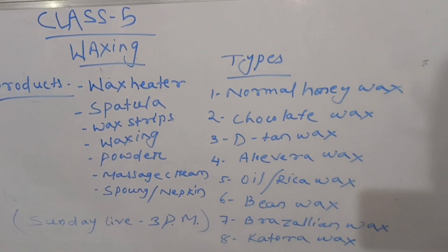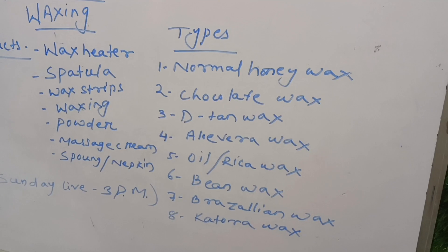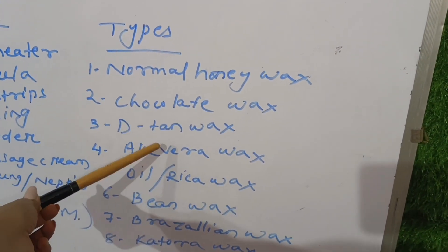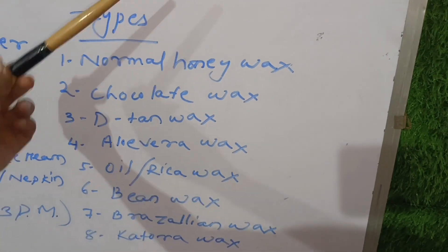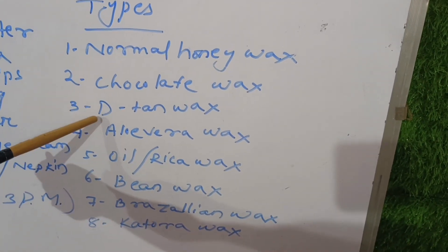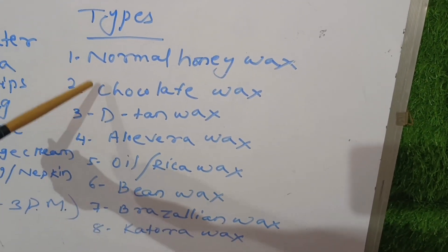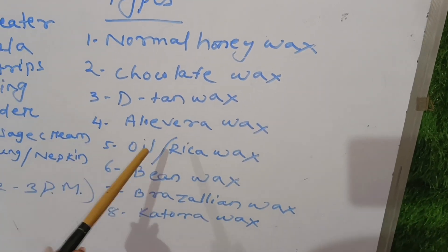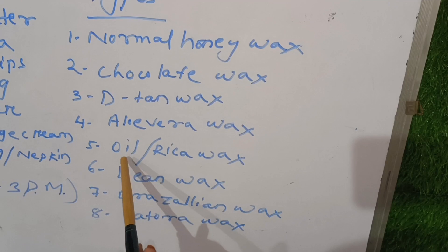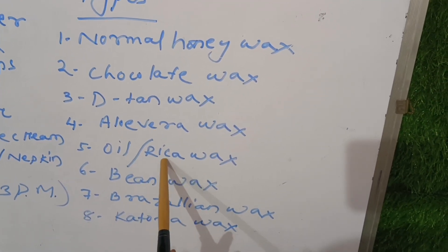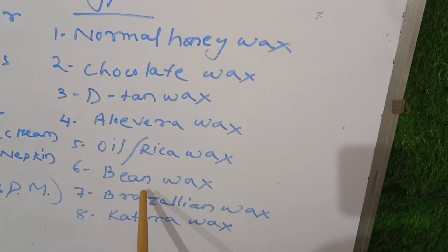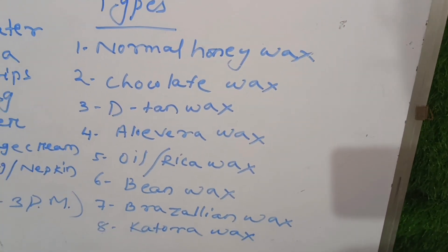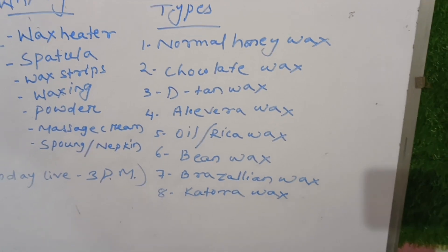There are many types of waxing. First, there is normal wax, then chocolate wax, then detain wax, aloe vera wax — many flavors like white or dark chocolate. I also have regular wax with oil. Some varieties come in oil base. Then there are bean wax, Brazilian wax, Katura wax, and many more varieties.